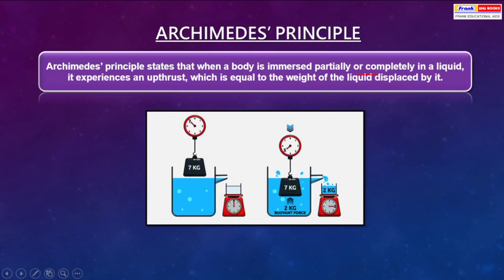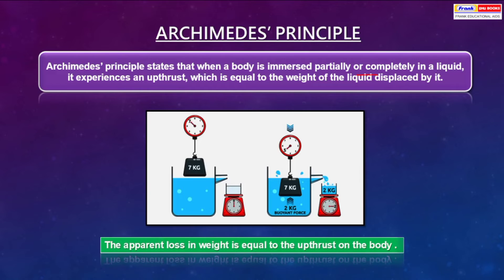As an experiment illustrating Archimedes' principle: a clock weighed 7 kg before it was put into water. When thrown into the water, the buoyant force acting on it makes it feel as if it were only 2 kg. So the apparent loss in weight is equal to the upthrust on the body.